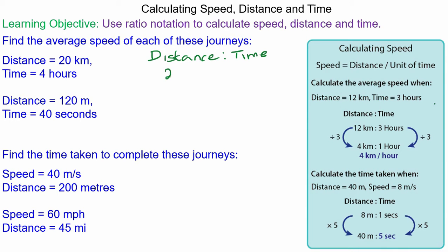In the first question we have 20 kilometers to every four hours. Now speed is a measure of distance in every one hour. So four divided by four using equivalent ratios and 20 divided by four is five kilometers.